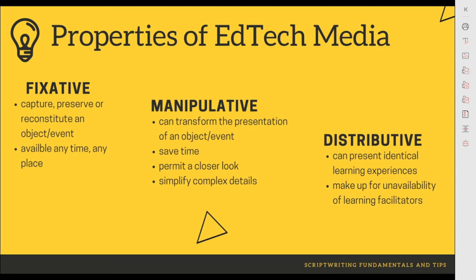Another property of EdTech Media is manipulative. According to its definition, it can transform the presentation of an object or event — meaning we can rearrange materials or information for purposes of updating, change of emphasis, or correction. Our video lesson should allow students to go to a part that interests them. For example, a teacher showing a microscope in a science subject can directly focus or zoom in to the parts she is emphasizing during her discussion — unlike in books or pictures where the microscope image is flat.